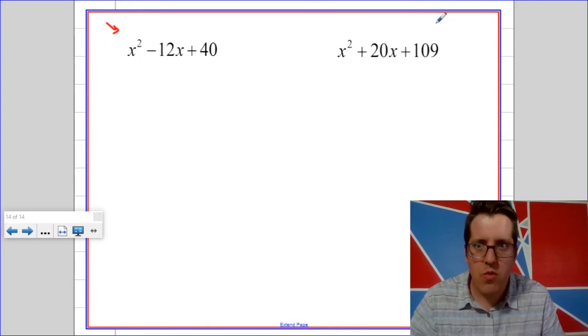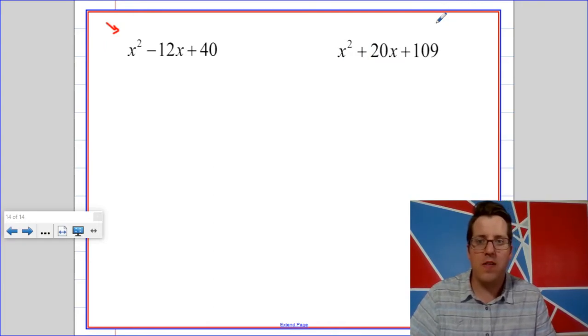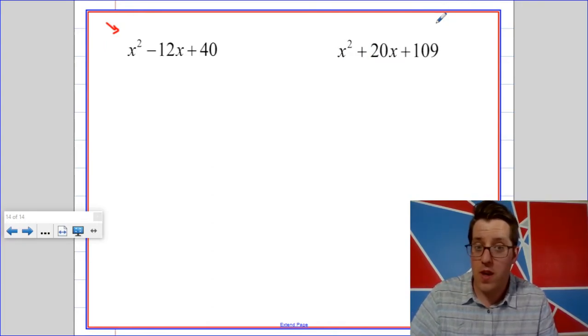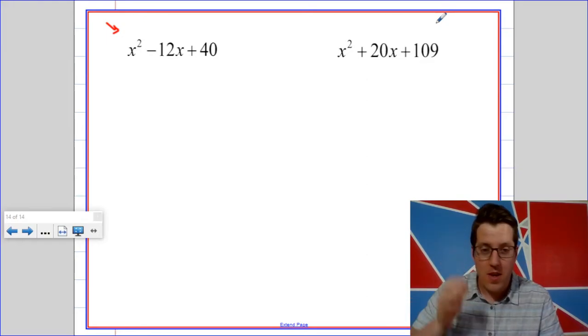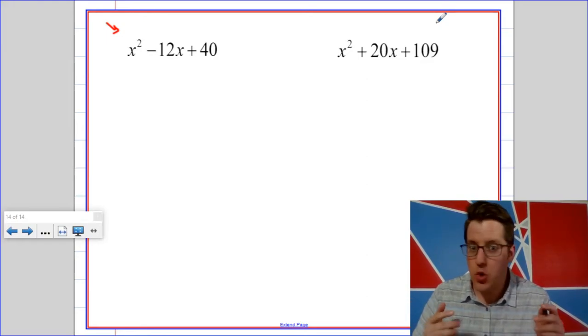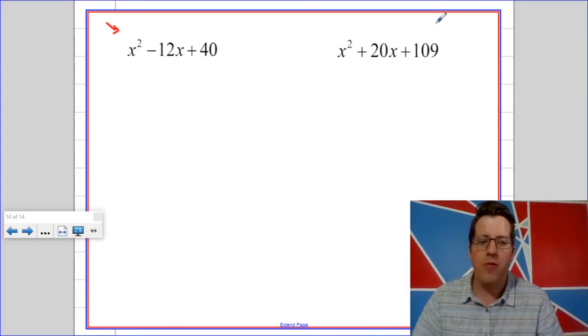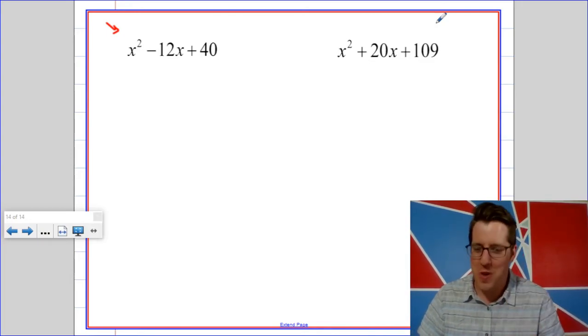And now we're going to think about x squared minus 12x plus 40 as a difference of squares. It's not even a difference of two things really, and they're certainly not all perfect squares. So just wait and see.